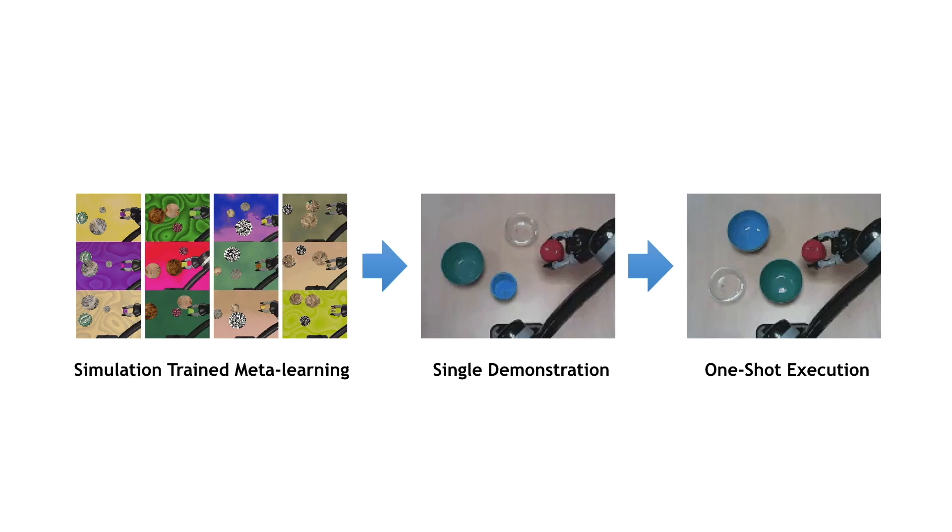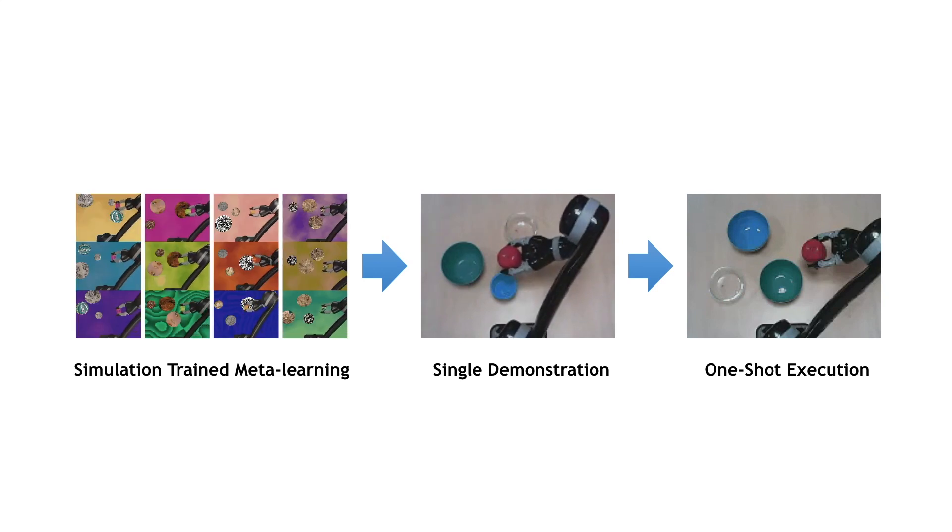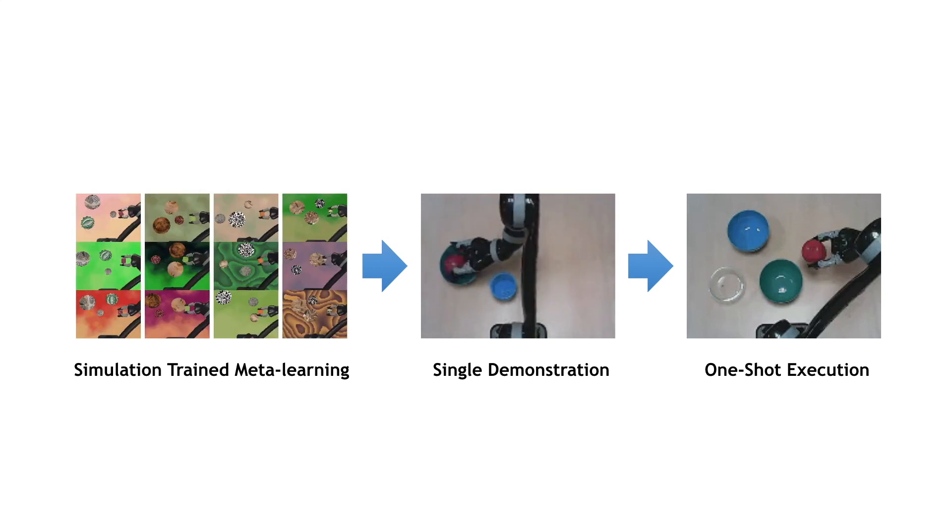For our final domain, we run a robotic placement experiment where a robot arm is given the task of placing a held object into a specified container whilst avoiding two distractors.